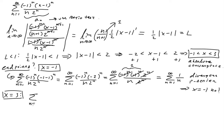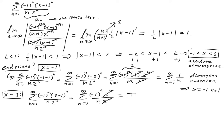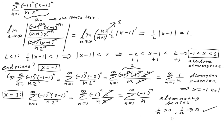Now let's try x equals 3. We have the sum from n equals 1 to infinity of negative 1 to the n times 3 minus 1, all to the n, all over n times 2 to the n. That becomes negative 1 to the n times 2 to the n, all over n times 2 to the n. The 2 to the n factors cancel, giving the sum from 1 to infinity of negative 1 to the n over n. This is an alternating series where 1 over n is positive, greater than 0, and goes to 0 — so it converges.